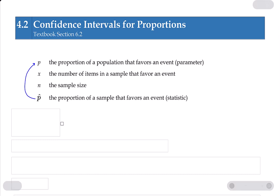Now to compute p hat, just know all we have to do is take the number of items in the sample that favor the event and divide that by the number of items in the sample altogether.